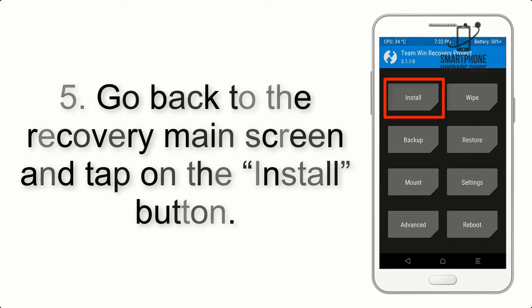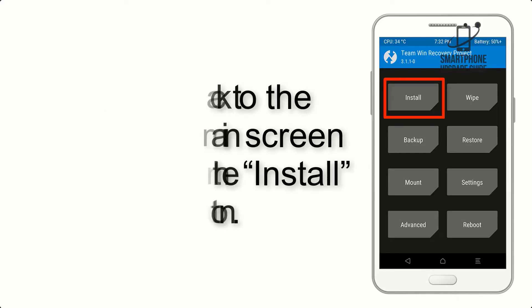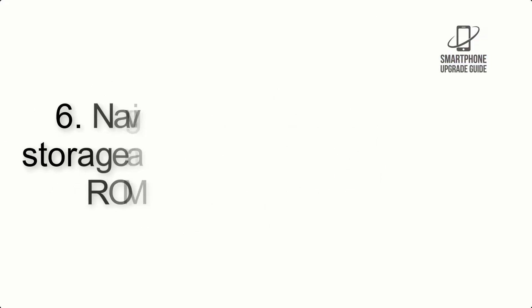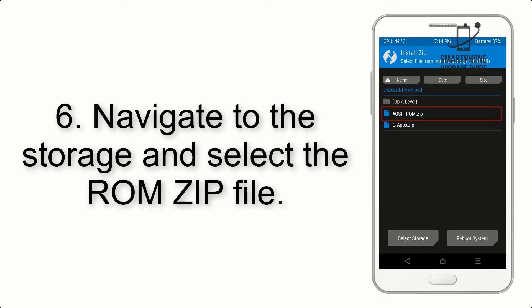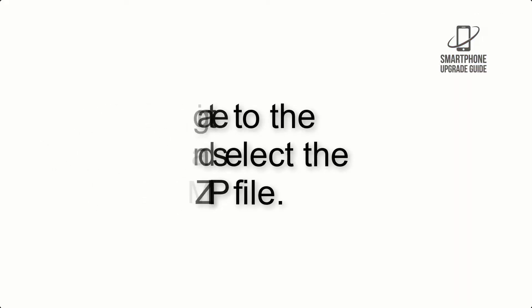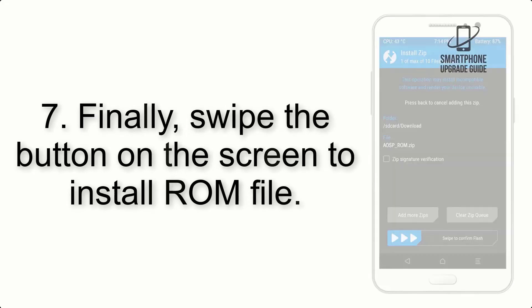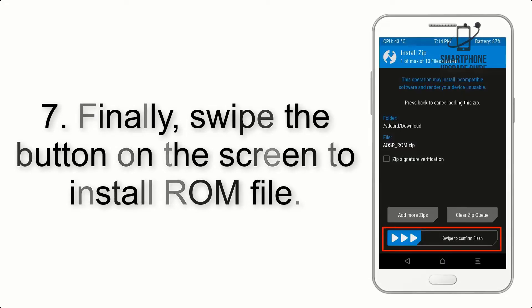Step 5: Go back to the recovery main screen and tap on the Install button. Step 6: Navigate to the storage and select the ROM zip file.